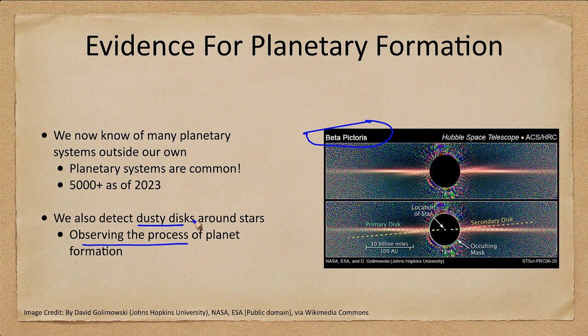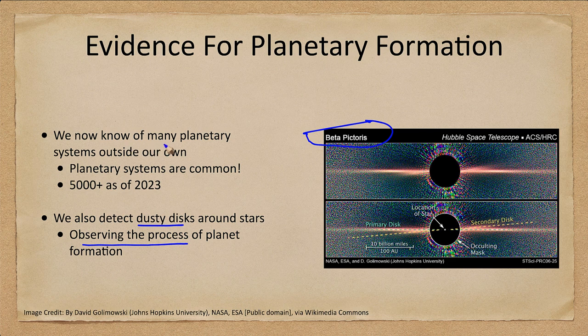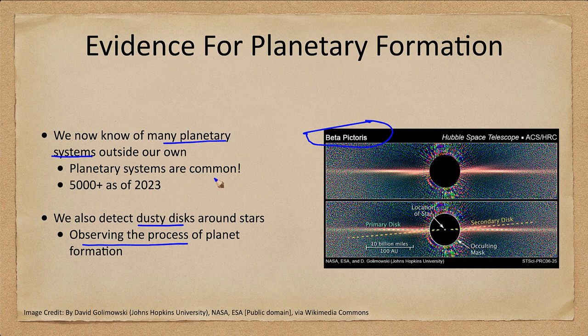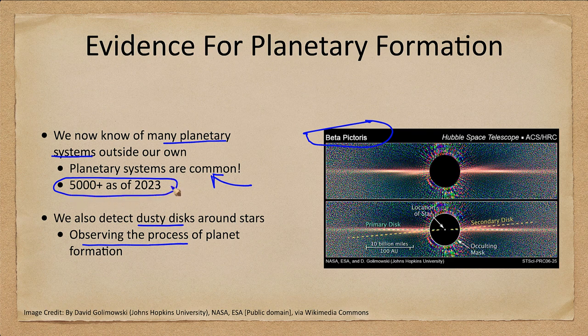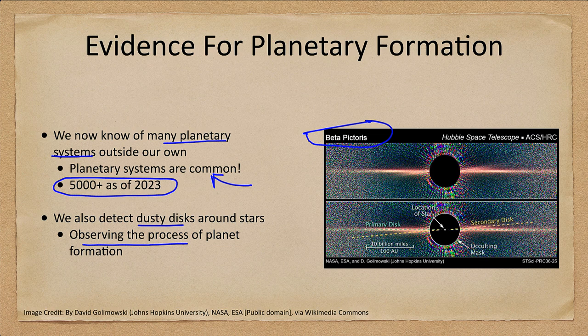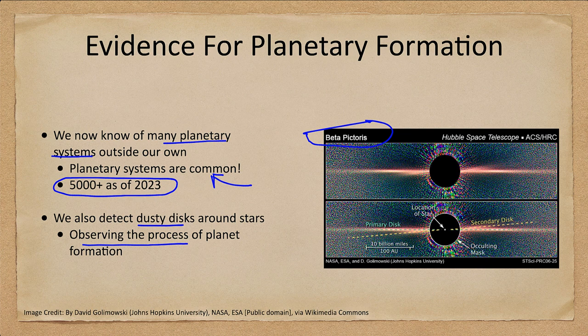We have learned that there are now many planetary systems, that planetary systems are very common in the universe. In fact, as of 2023, more than 5000 planets outside our solar system have been detected. If we think about it, just a few decades ago we knew of none. We have detected now over 5000 confirmed planets outside of our own solar system.